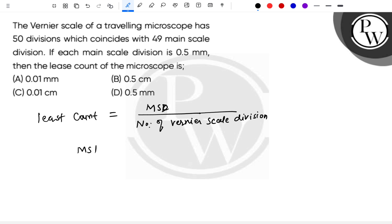Main scale division hummaree paas kitna given hai, 0.5 mm, and number of Vernier scale divisions kitne given hain, equal to 50. So yahaan se least count kitna nikalayega? Main scale division 0.5 mm upon number of Vernier scale divisions kitne, 50. To yahaan se least count 0.01 mm.